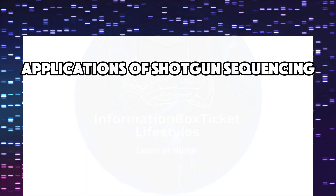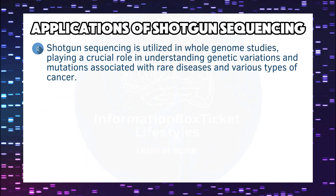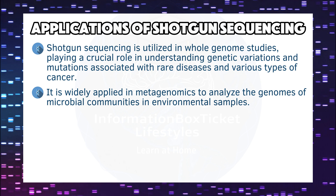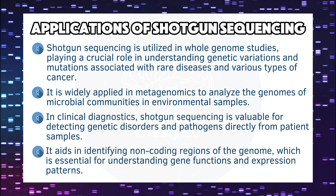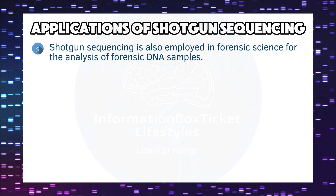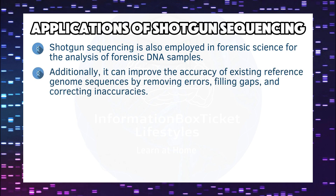Applications of shotgun sequencing: Shotgun sequencing is utilized in whole genome studies, playing a crucial role in understanding genetic variations and mutations associated with rare diseases and various types of cancer. It is widely applied in metagenomics to analyze the genomes of microbial communities in environmental samples. In clinical diagnostics, it is valuable for detecting genetic disorders and pathogens directly from patient samples. It aids in identifying non-coding regions of the genome, essential for understanding gene functions and expression patterns. Shotgun sequencing is also employed in forensic science for the analysis of forensic DNA samples, and it can improve the accuracy of existing reference genome sequences by removing errors, filling gaps, and correcting inaccuracies.